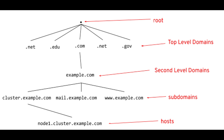When you type a domain name in your browser, it first contacts recursive DNS servers throughout the world. Many people use recursive DNS servers managed by their internet service provider. A recursive DNS query occurs when a client requests information from a DNS server that is set to query subsequent DNS servers until a definitive answer is returned to the client.